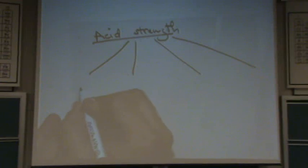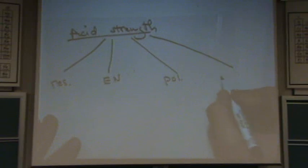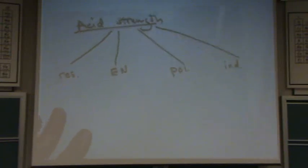There are four factors that you have to look for, and we'll do a couple examples. Something called, and I explain this differently than the text, so if you like the way the text does it, you can ignore what I'm saying. But I think this is the easiest way. Resonance, electronegativity, polarizability, and inductive effect. Those are the four factors.